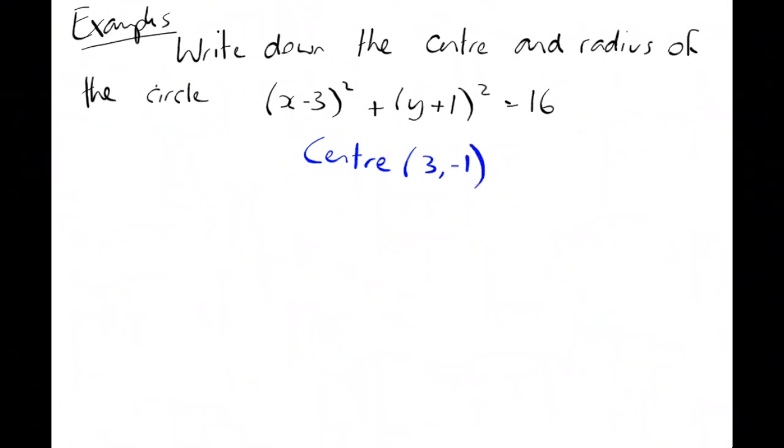So x is going to be plus 3, then y is going to be minus 1. And remember the formula was x minus a all squared plus y minus b all squared equals r squared. So the radius is the square root of 16. So the radius is 4.